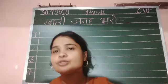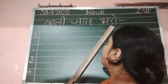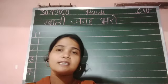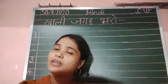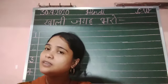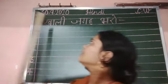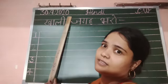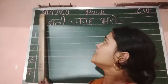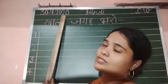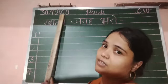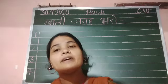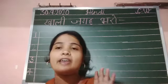Today I am going to teach you Kali Jagay Bharo. But before teaching, I have put up some questions. Which date is today? Today is 30 September 2020. 30 September 2020 — you are the last day of September.